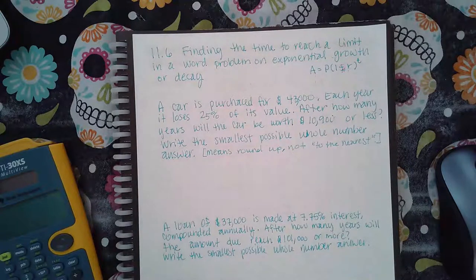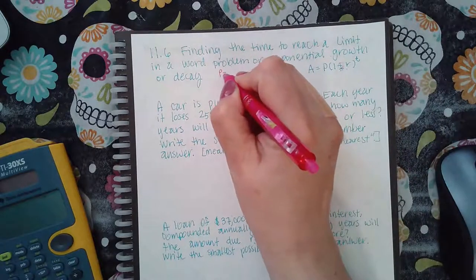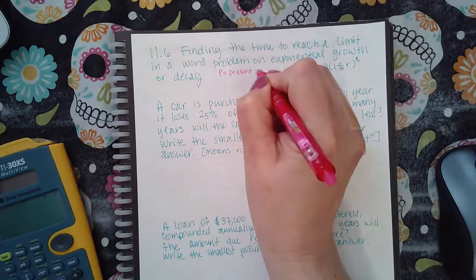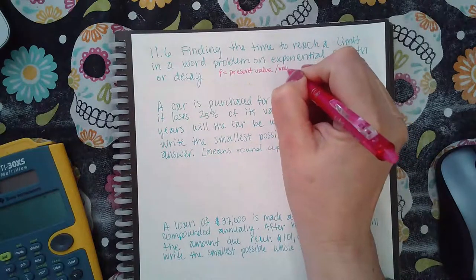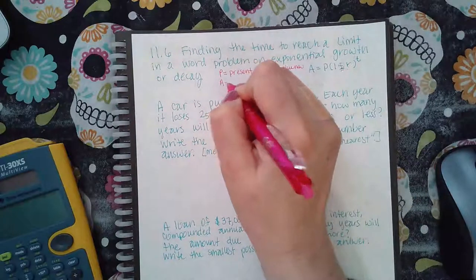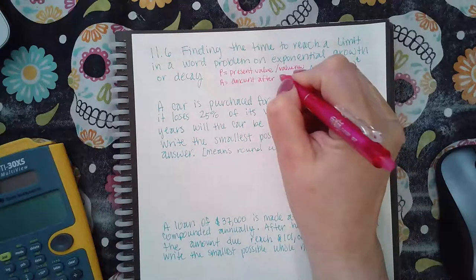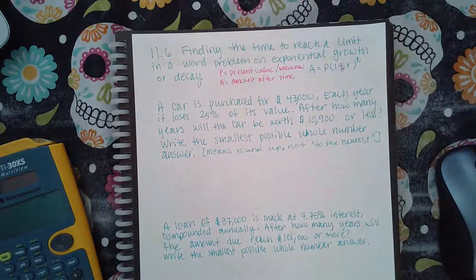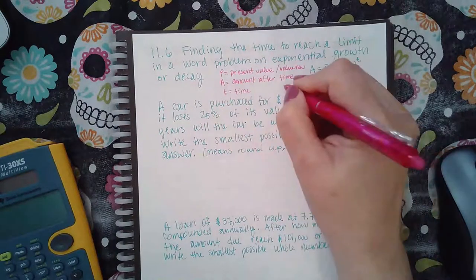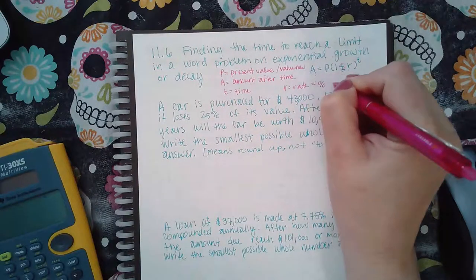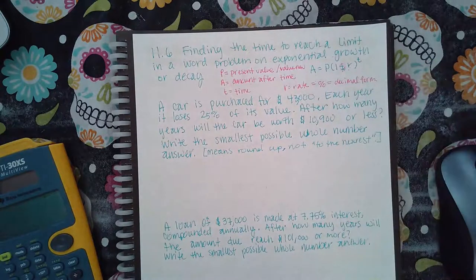Now, here it says, a car is purchased for $43,000. So let me tell you what all these letters represent. P is like the present value, or what the value now. A is the amount after time. So this is the value that happens after some while. And then T, of course, is your time. And R is, of course, your rate. It's usually given in a percent, but you have to change it to its decimal form. You cannot plug it into the equation without converting it into your decimal form.